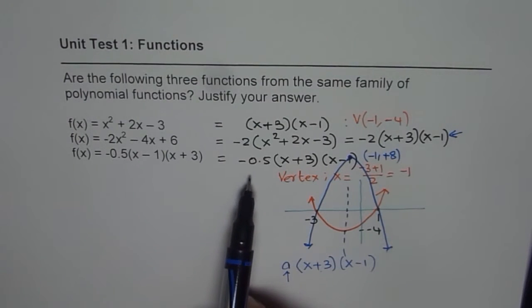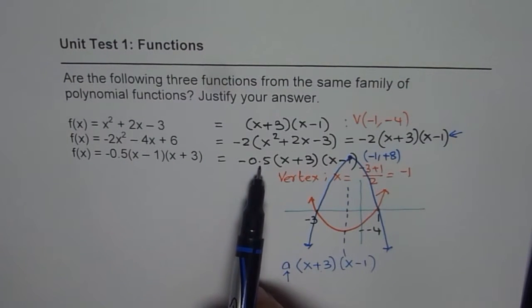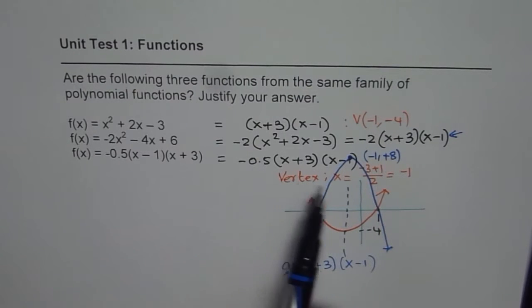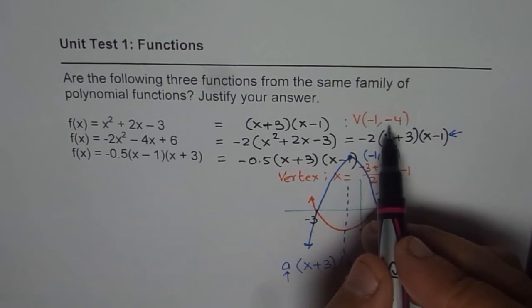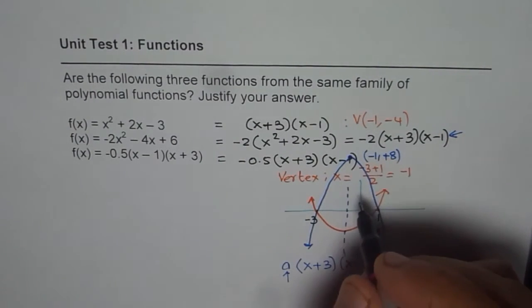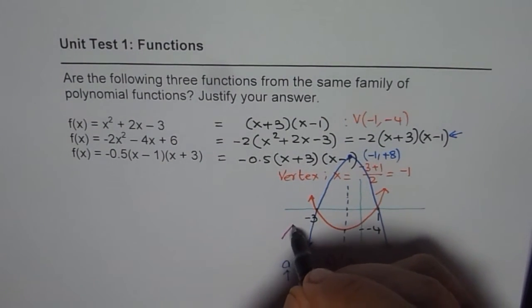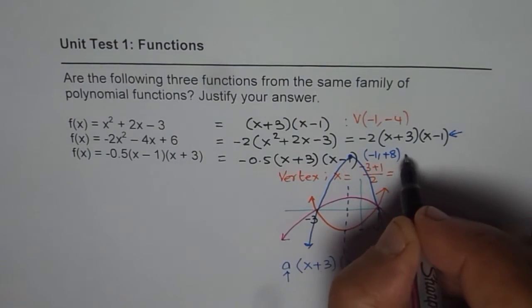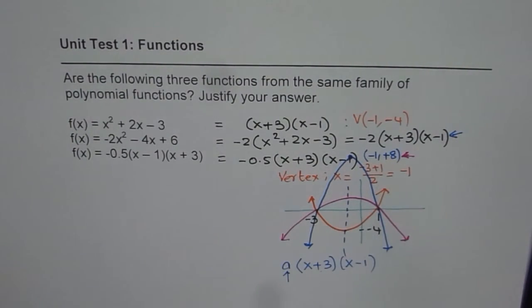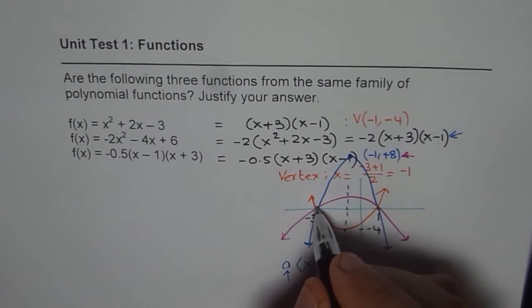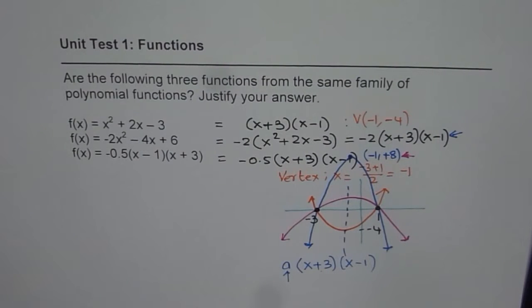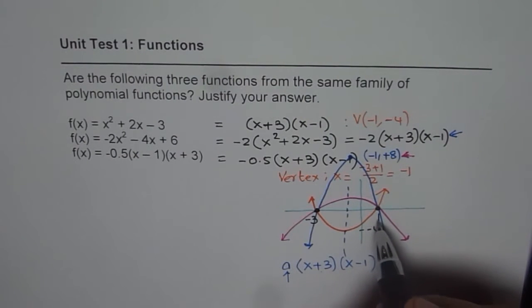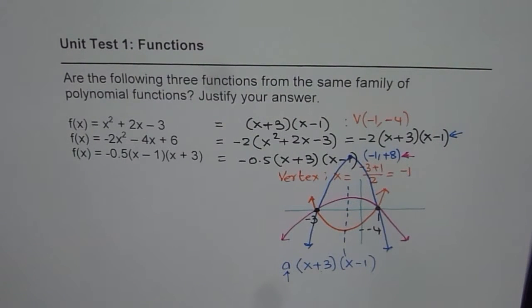Now, the third function is, again, leading coefficient is minus 0.5. So, it will open downwards. But in this case, your maximum value is going to be half of minus 4, with a negative sign. That is to say, 2. So, that will be a graph which will be kind of like this. It is going to turn from here and will go like this. You can clearly see that all the three functions have a common characteristic. They belong to the same family. And that is, they have linear zeros at x equals to minus 3 and 1. That is how you can justify your answer.